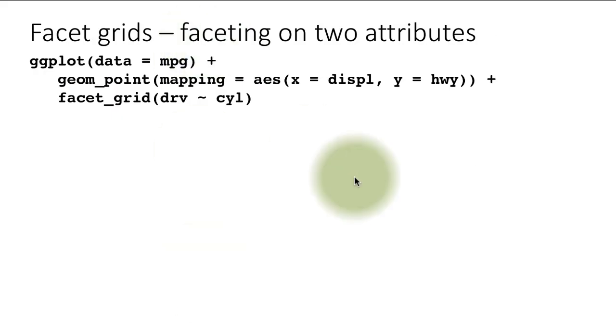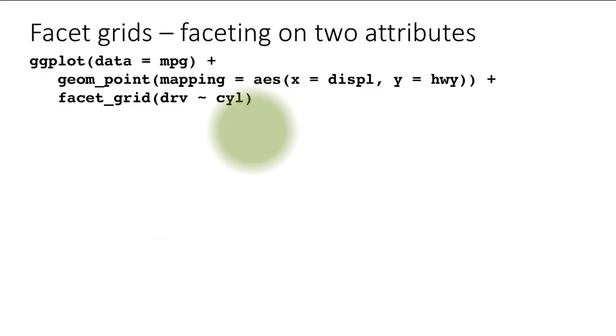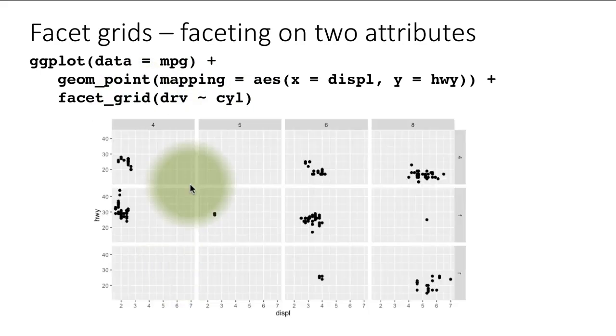Earlier, if you remember, we did faceting on two variables: class and drive. There's another way to facet on two variables, and that's what I prefer. Here, ggplot data is mpg, mapping is displacement is x, highway is y. This time I'm calling the function facet_grid, drive tilde cylinder. I want to have a separate plot for every combination of drive and cylinder, but arrange it in the form of a grid.